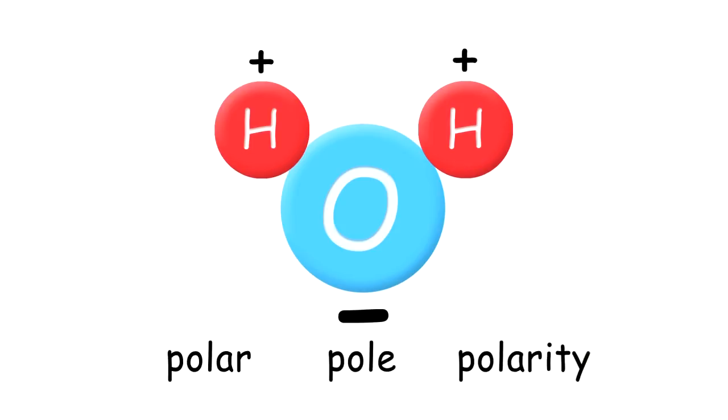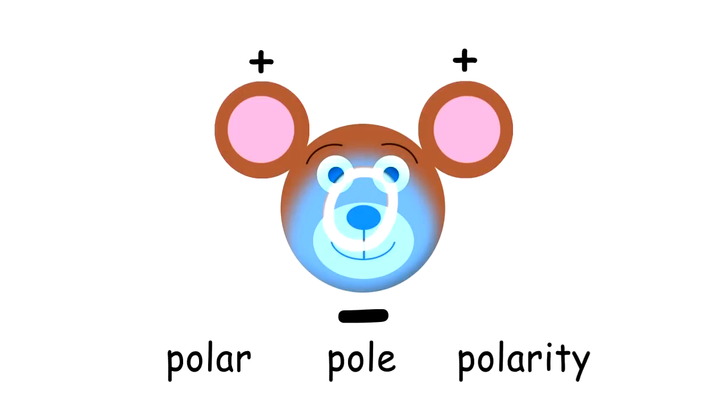Thinking of that cartoon teddy bear again, the chin side of the oxygen atom has a slight negative electrical charge. The opposite side, the side with the two hydrogen ears, has a slight positive electrical charge.